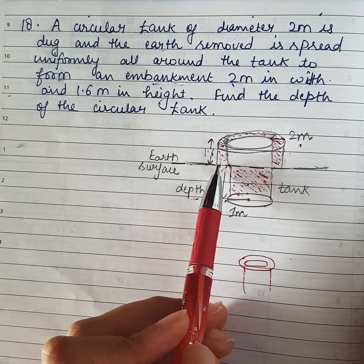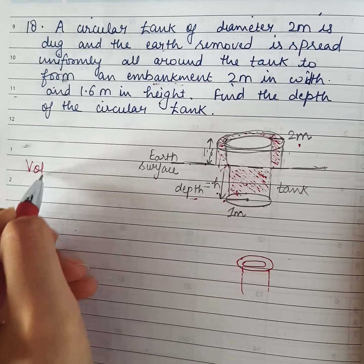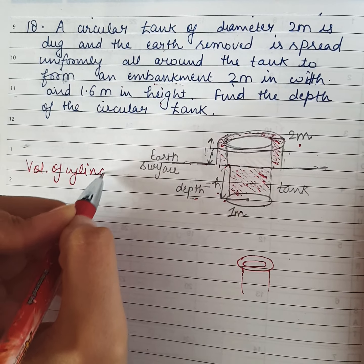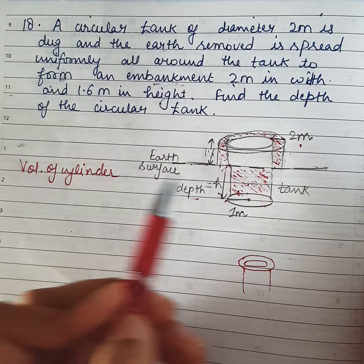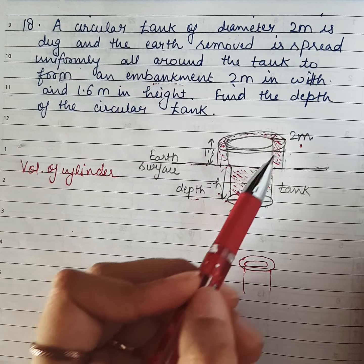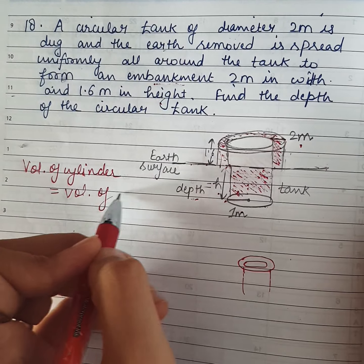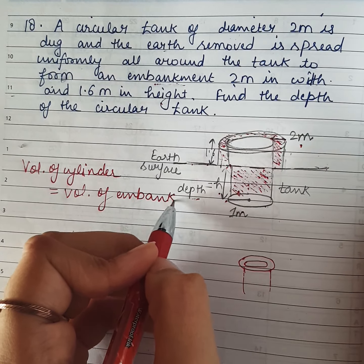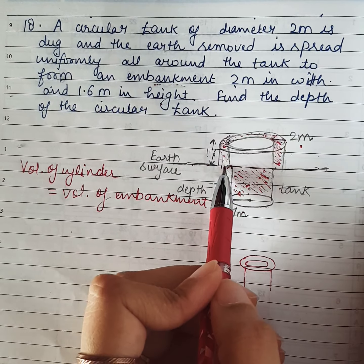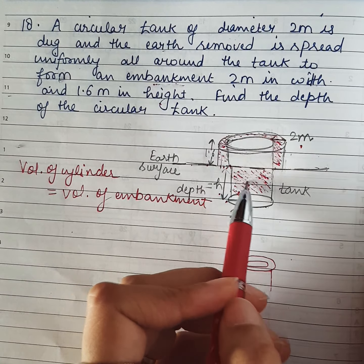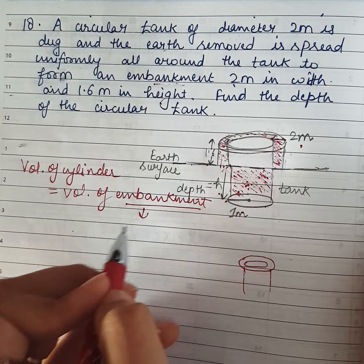Mathematically, volume of the dug cylinder equals the volume of the embankment. Jo soil yahaan se remove kiya uski capacity — volume of cylinder — and the volume of embankment will be the same. Kyunki ek ko khod kar doosre ka construction hua hai, so the soil used in both cases is the same. The embankment is actually a shape of a hollow cylinder.